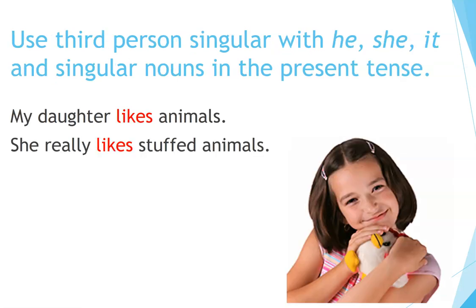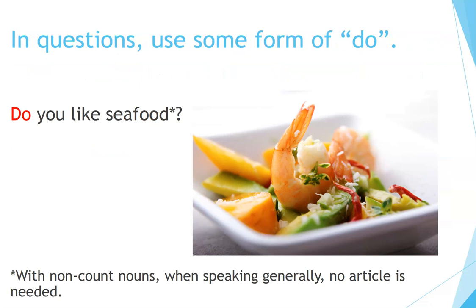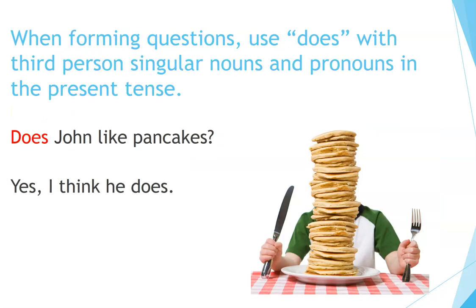Use third person singular with he, she, it, and singular nouns in the present tense: My daughter likes animals. She really likes stuffed animals. In questions, use some form of do: Do you like seafood? With non-count nouns, when speaking generally, no article is needed. When forming questions, use does with third person singular nouns and pronouns in the present tense: Does John like pancakes? Yes, I think he does.